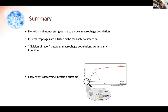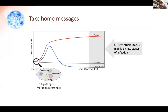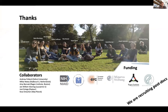To conclude: non-classical monocytes give rise to novel macrophage populations — the CD9 macrophages — which provide a tissue niche for bacterial infection. There is a nice division of labor between macrophage populations in the spleen, both with recruited monocytes and resident macrophages. The early events determine the course of infection in the long run. I would like to thank my entire lab, our collaborators, and the funding. We are currently actively looking for postdocs in the lab. Thank you for listening and for the invitation.